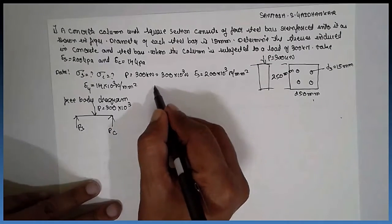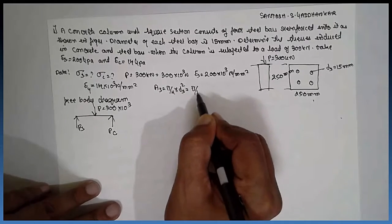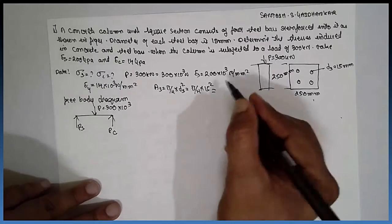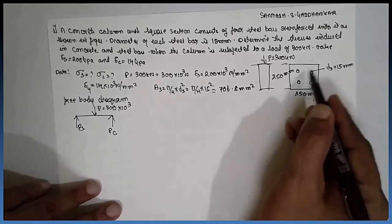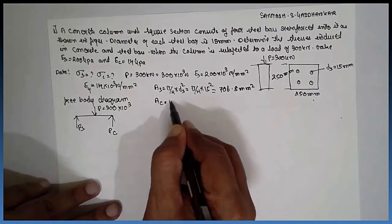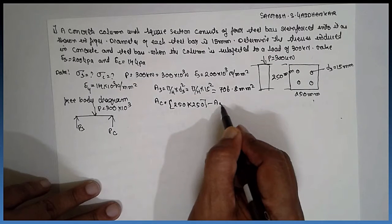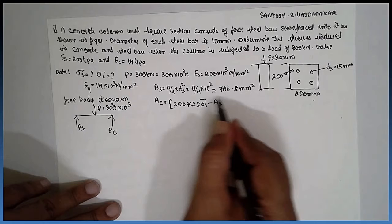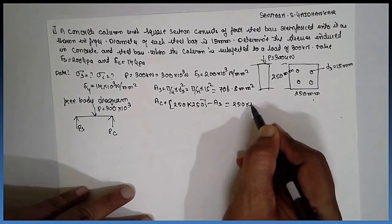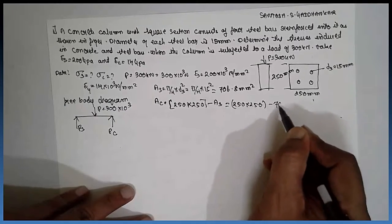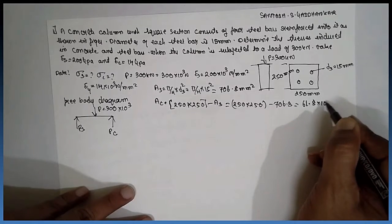Before going to the free body diagram, we find the area of steel: AS equals pi by 4 times D squared, that is pi by 4 times 15 squared, which equals 706.8 mm square. Next, area of concrete: AC equals 250 times 250 minus 706.8, which is 61.8 times 10 to the power 3 mm square.